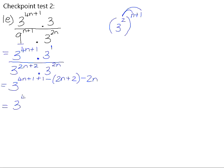If we simplify, that gives us 4n. Positive 1 add 1 is positive 2. If we distribute the negative into the brackets, we get negative 2n minus 2 and minus 2n. If we simplify the exponent,